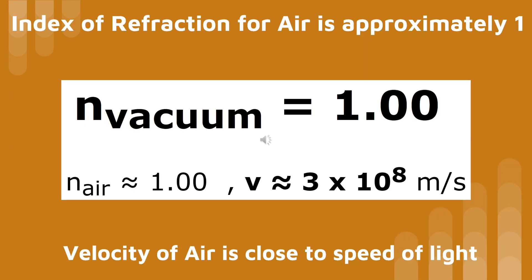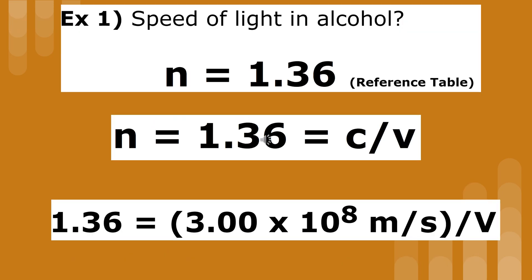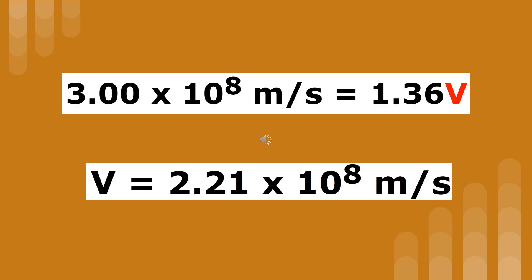Light slows down so little when it enters air, its index of refraction is very close to 1. When solving most problems, we round down the index of refraction to 1. To find the speed of light in ethyl alcohol, you look up the index of refraction from your reference table and plug it into the equation. Next step is to cross-multiply and solve. The velocity of light in ethyl alcohol can be found by dividing both sides by 1.36.